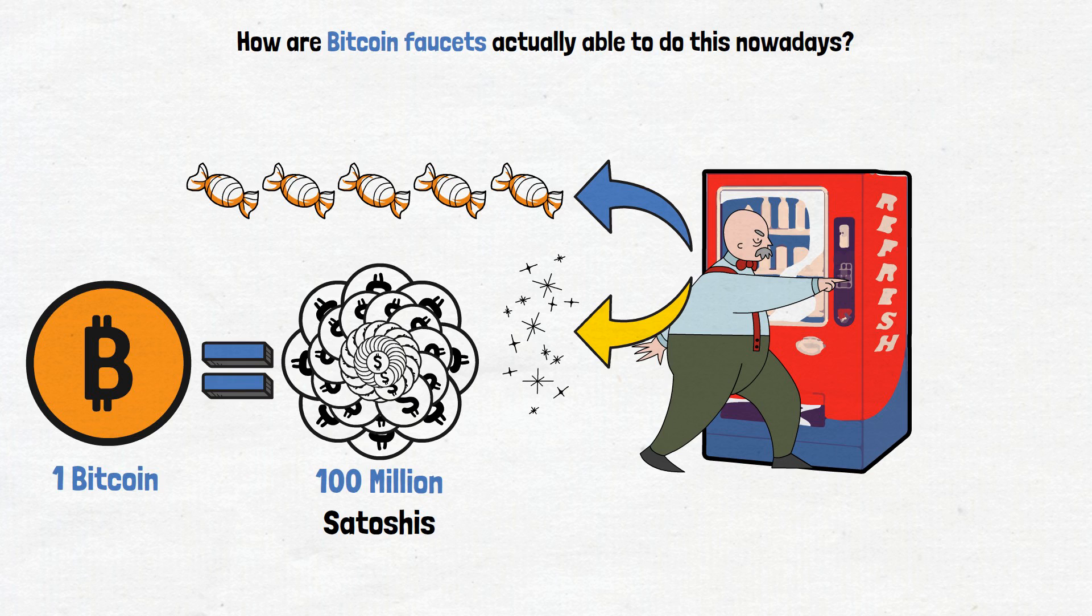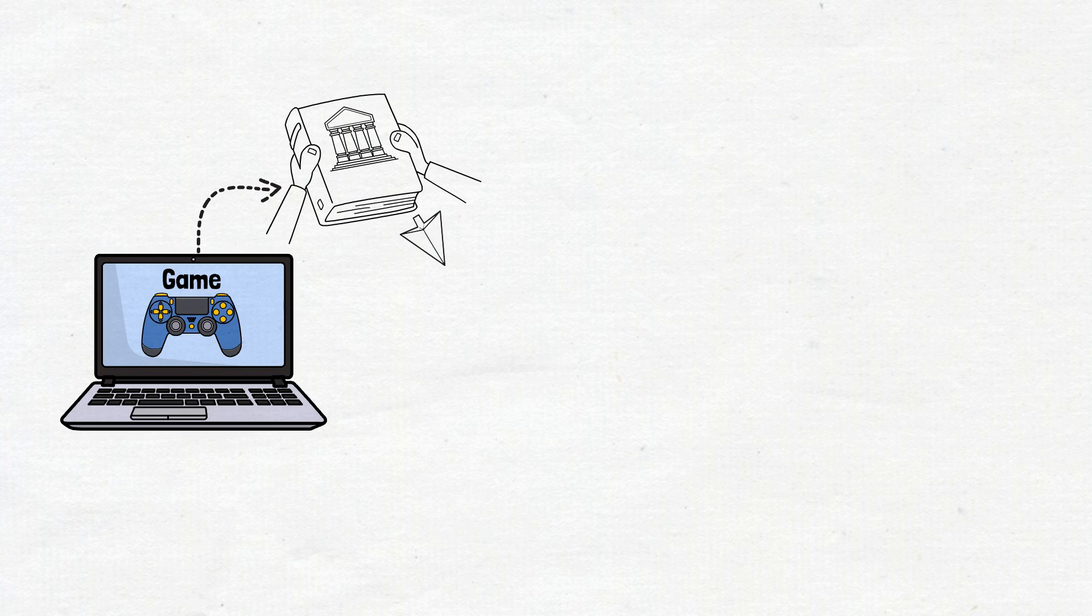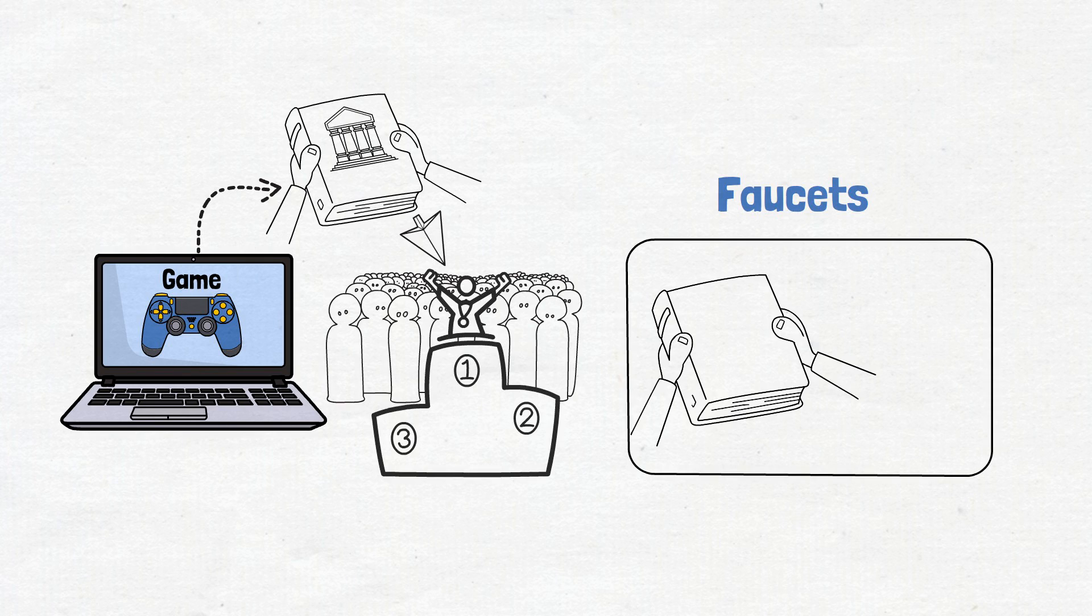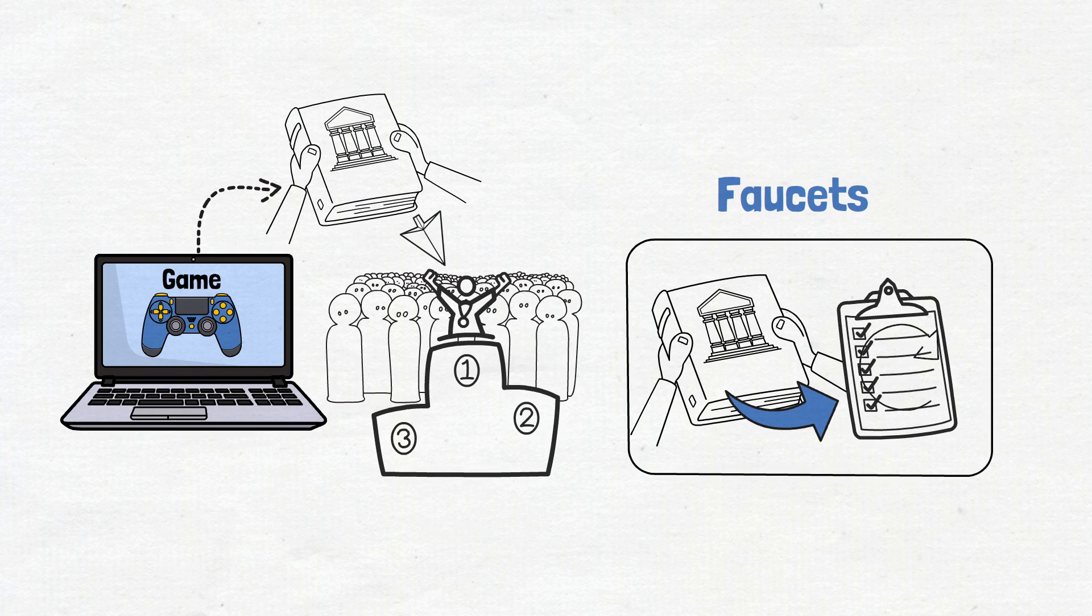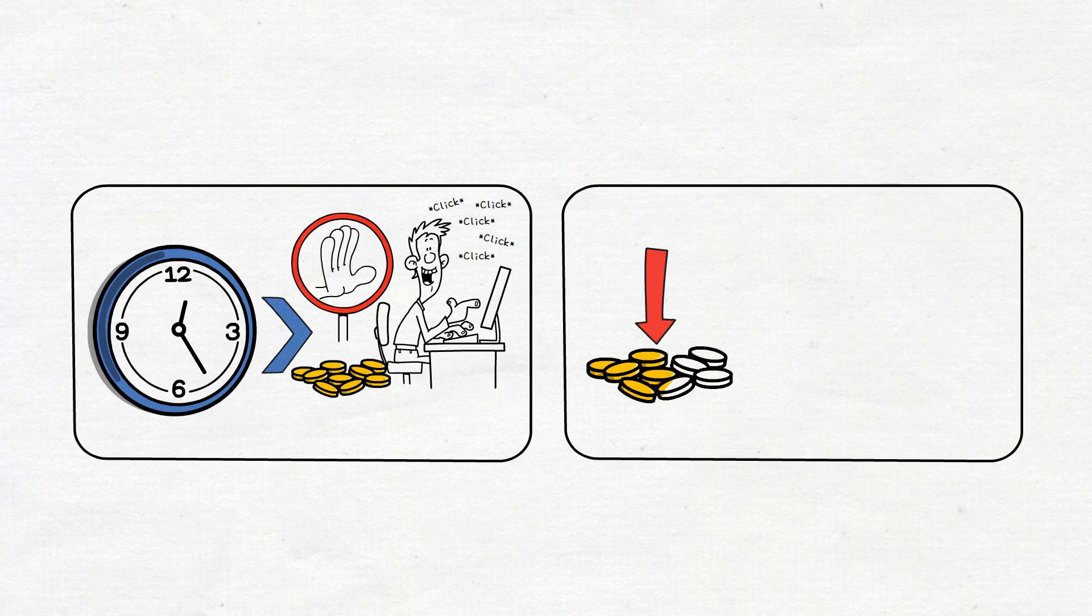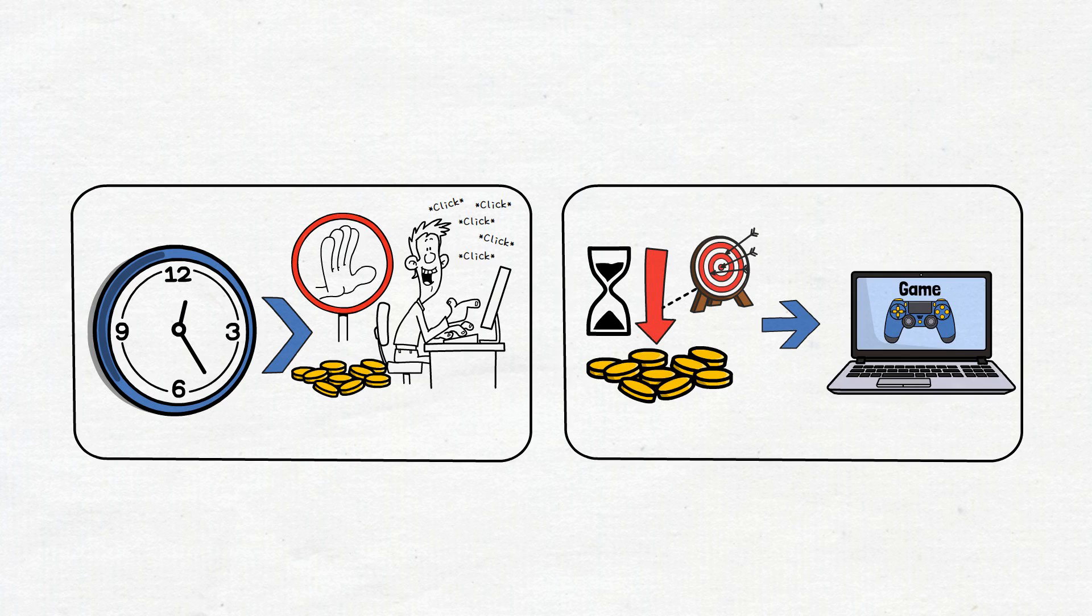And you know how some games have rules to make sure everyone has a fair shot at winning? Well, faucets have their own sets of rules too. And the limitations they impose are usually reset every day. Some faucets have timers that limit how often you can claim, so you can't just keep clicking endlessly. Others might reduce the rewards you get over time or even for doing the same task repeatedly. It's like playing a game where the difficulty level goes up the more you play.